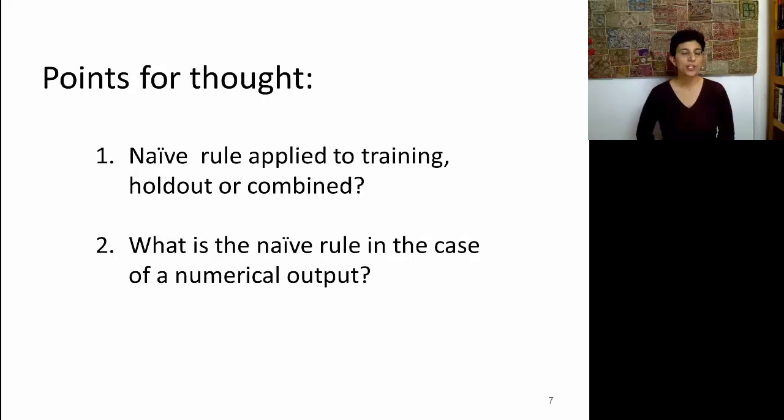Two points for thought when you're using the Naive Rule. First thing is, should we take the training data and look at that in order to determine the majority? Or should we do this on the holdout set? Or perhaps we should combine them and look at the majority overall? What would determine which data set you would use?